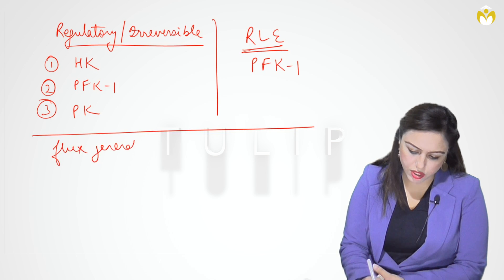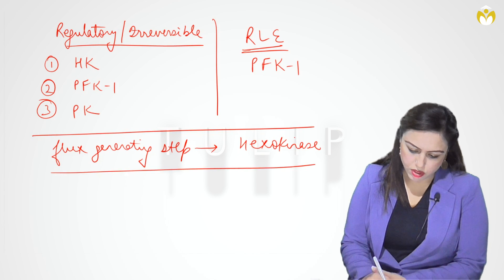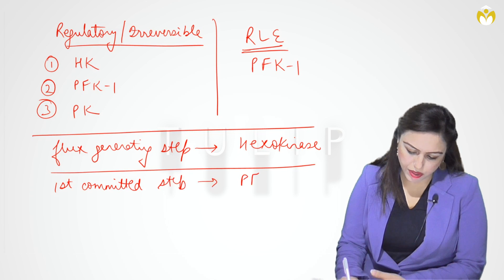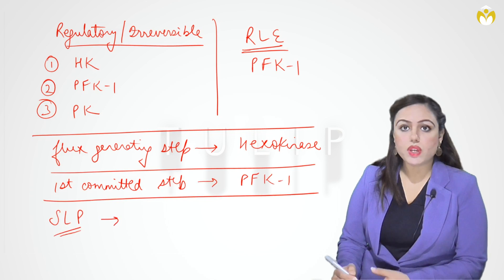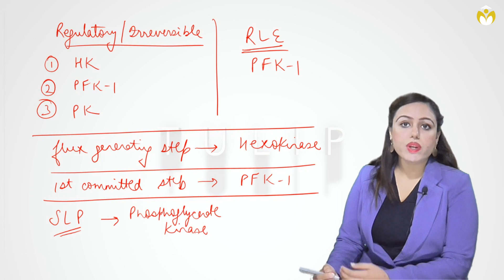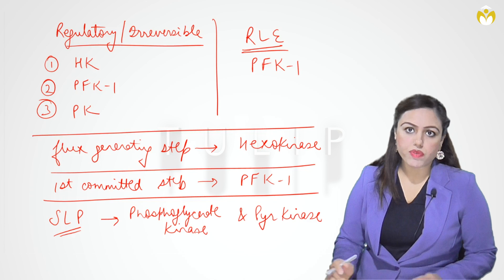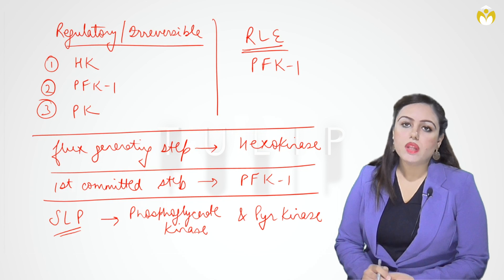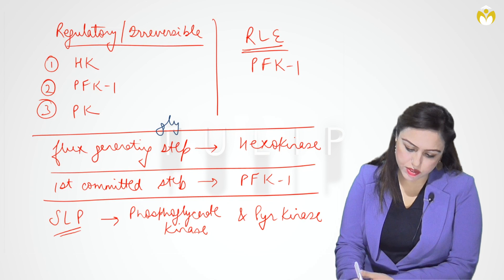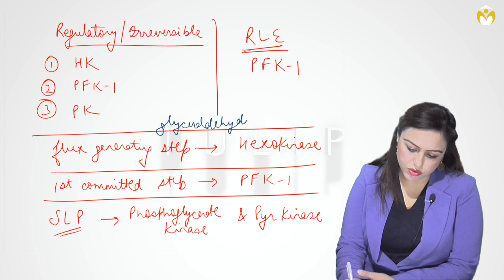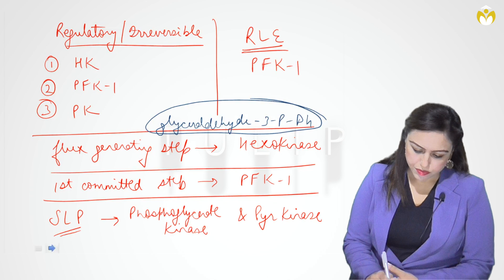If they ask the rate-limiting enzyme of glycolysis, the answer is PFK1. If they ask the flux-generating step, the answer is hexokinase. If they ask the first committed step, the answer is PFK1 (phosphofructokinase 1). Substrate-level phosphorylation steps are phosphoglycerate kinase (PGK) and pyruvate kinase. If they ask which enzyme of glycolysis can use inorganic phosphate, the answer is glyceraldehyde-3-phosphate dehydrogenase — the only enzyme in glycolysis that can use inorganic phosphate.